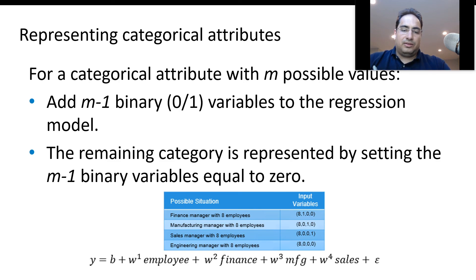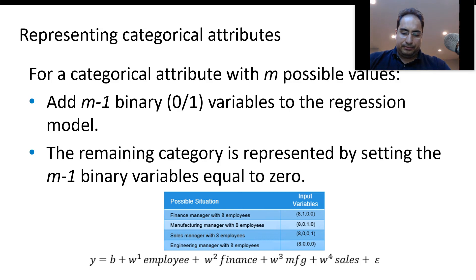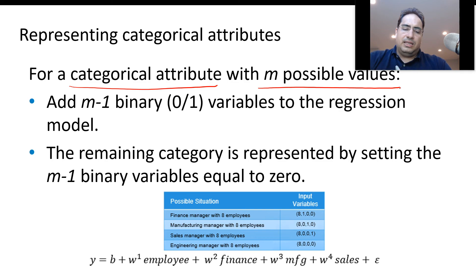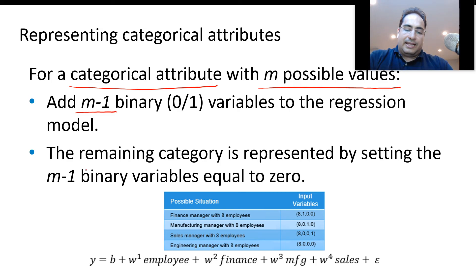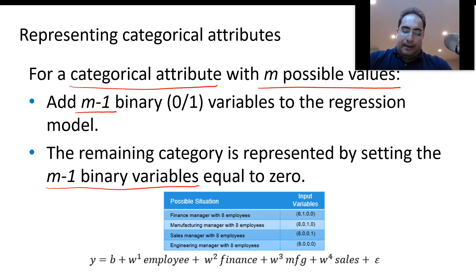If you have categorical attributes or features, you should convert them into a representation that linear regression can understand. One-hot encoding can be used, but for linear regression we use a form where instead of using exactly m attributes for a categorical feature with m possible values, you use m minus one binary variables. The reason is that the remaining category becomes the base category when all the m minus one variables are equal to zero.